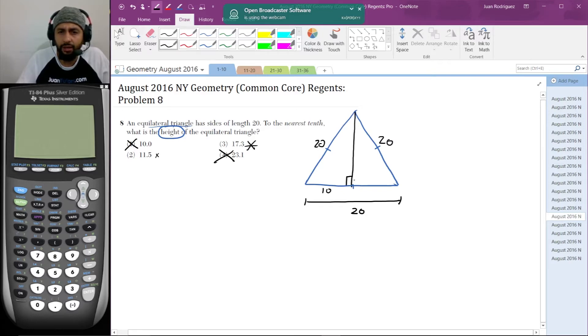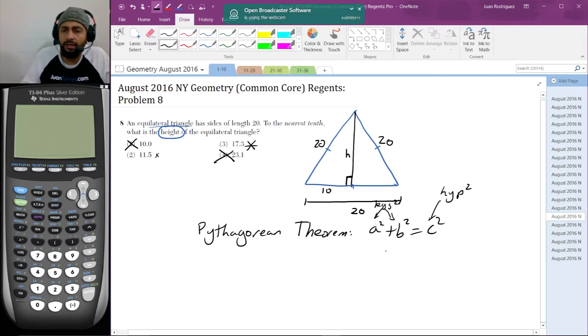If the bottom is 20, then this side is 10. This is a right triangle with side h, and I'm going to use the Pythagorean theorem: a² + b² = c², where c is the hypotenuse and these are legs squared.